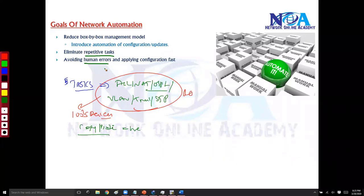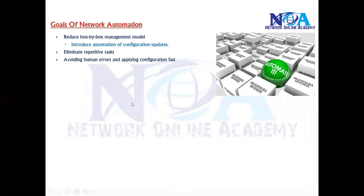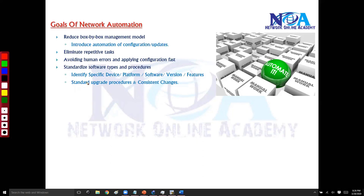Automation also avoids errors, because configurations are applied automatically via scripts rather than typed manually. All configurations are applied much faster than doing them one by one. Beyond that, we can standardize software types and procedures — once we eliminate box-by-box management, repetitive tasks, and human errors, we get a standardized procedure across all devices.